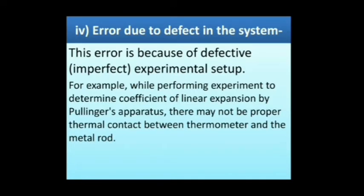Fourth, Error due to defect in the system: this error is because of a defective or imperfect experimental setup. For example, while performing an experiment to determine the coefficient of linear expansion by the Pullinger's apparatus, there may not be proper thermal contact between the thermometer and the metal rod.